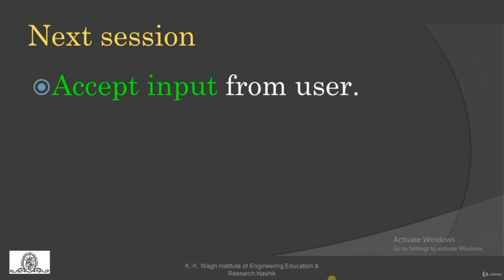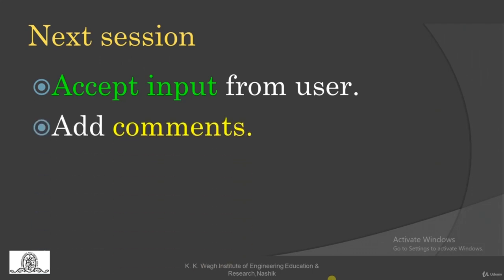For example, x = 10 + 25, so print(x) gives 35. And if x = 'beauty' + 'full', then print(x) gives 'beautiful'. This is how Python works differently for numeric and string character types. In the next session, we are going to accept input from the user. We'll also learn how to add comments. Stay connected, stay safe, stay healthy. Bye-bye.